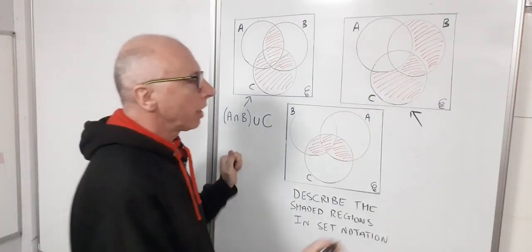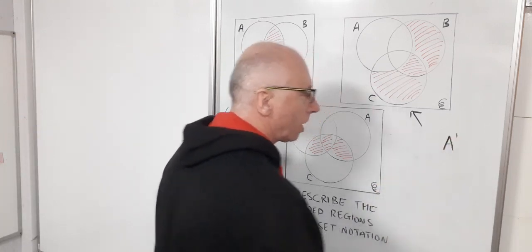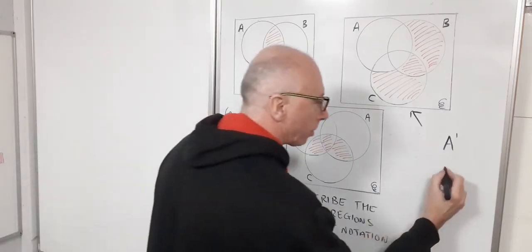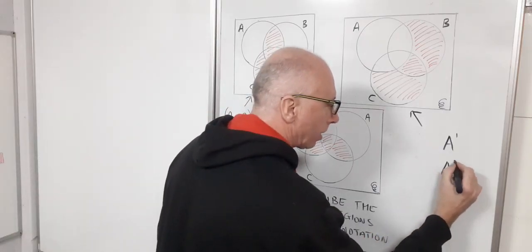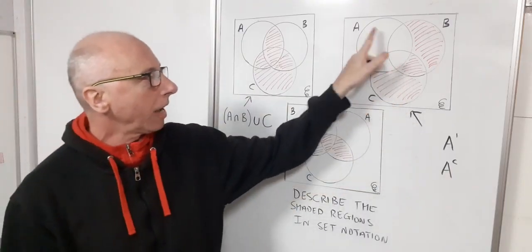For a start off, I could probably include not A, so let's do A apostrophe. You could also write that as complementary of A, so that would sometimes appear as an A with a C in the top there. That could also describe that bit there.